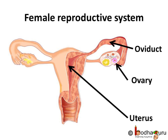Now coming to the female reproductive system. The female reproductive system consists of a pair of ovaries, oviducts which are also known as fallopian tubes, and the uterus. The ovary produces female gametes or ovum. Egg is used as the common term for ovum. The plural of ovum is ova, so the female gametes are called ova.